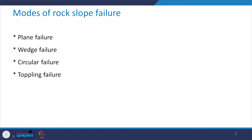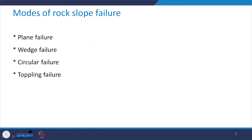There are 4 modes of rock slope failure. The first one is plane failure, then wedge failure, circular failure and toppling failure. Plane and wedge failures occur commonly. Circular failure occurs in rock mass where it is highly fractured. For toppling failure, when you have steeply dipping jointed beds, there are chances that toppling failure will occur.